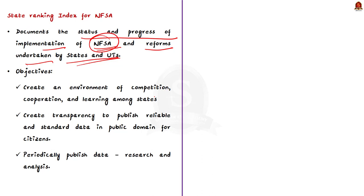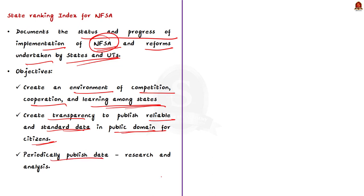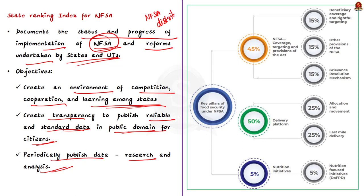The index attempts to document the status and progress of the implementation of the NFSA and highlights the reforms undertaken by states and union territories. It aims to create a cross-learning environment and scale up reform measures. Its objectives include creating an environment of competition, cooperation and learning among states; creating transparency by publishing reliable and standard data in the public domain; and periodically publishing data for research and analysis. Note that the present index is largely focused on NFSA distribution through TPDS only. States and union territories are ranked on three key pillars.